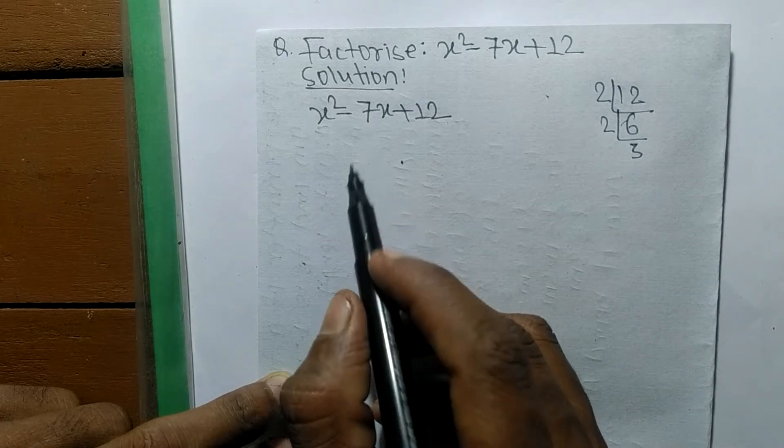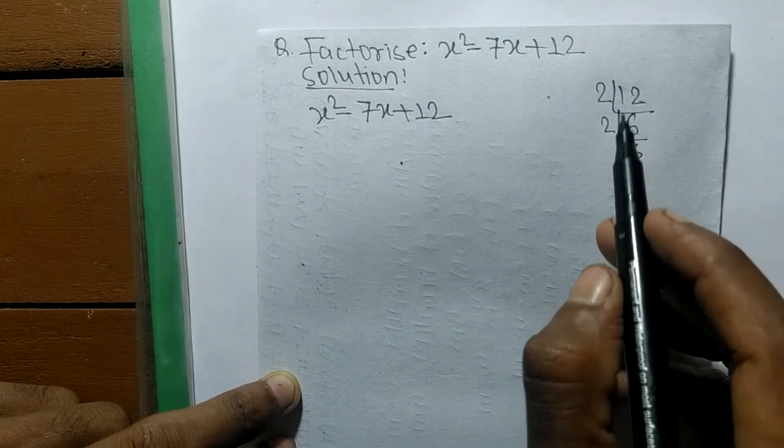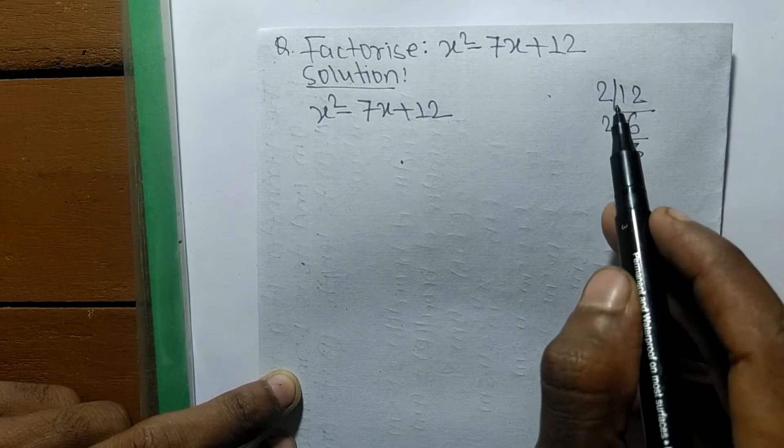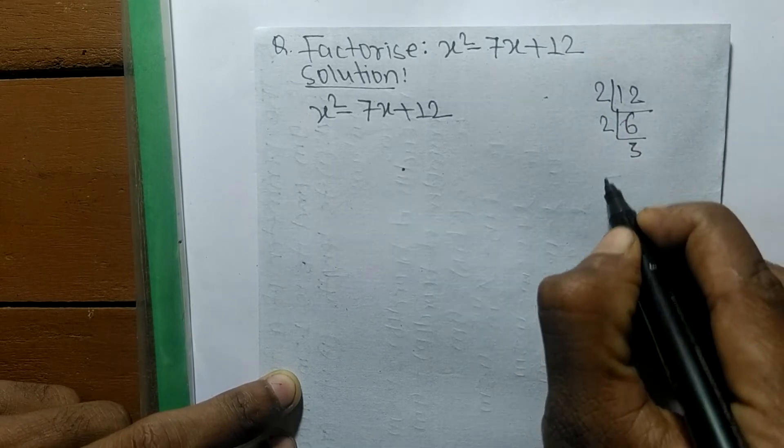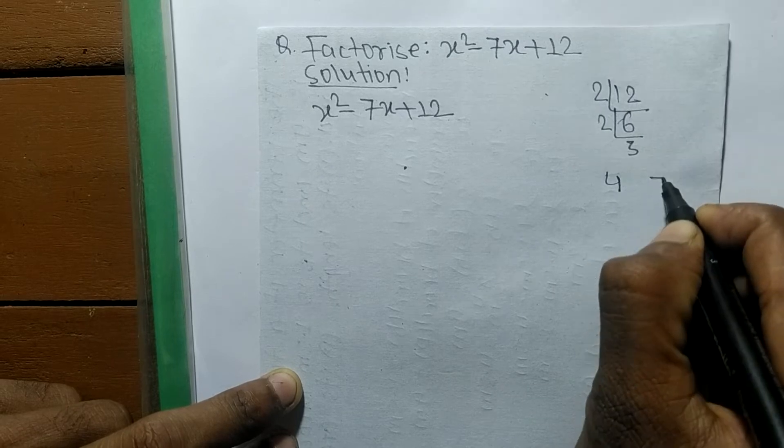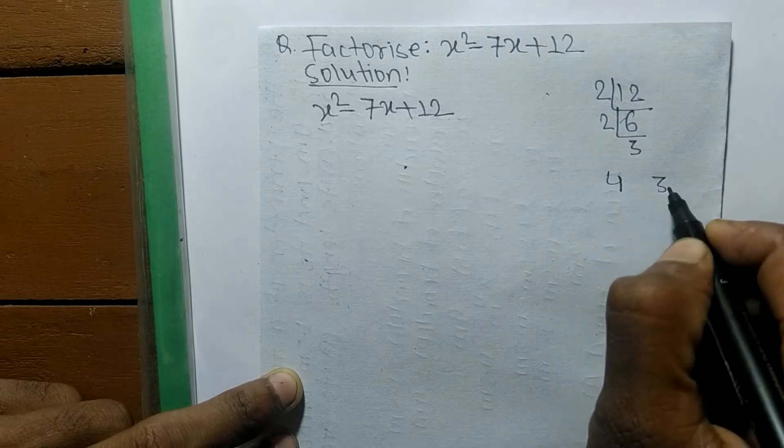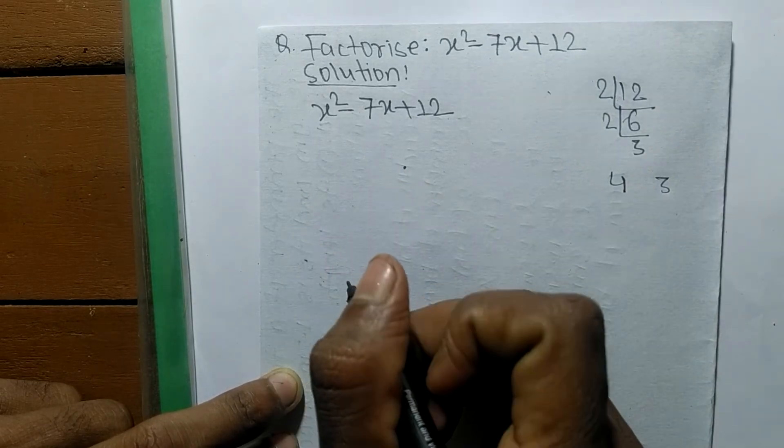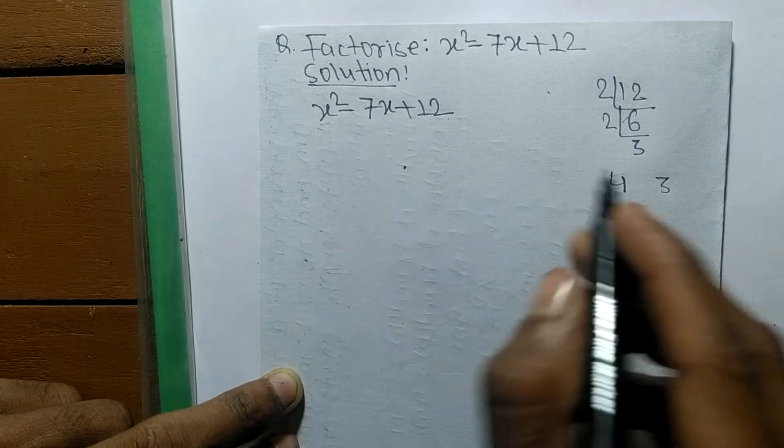Let's multiply first two numbers: 2 times 2 equals 4. The remaining is 3, so 4 plus 3 equals 7.